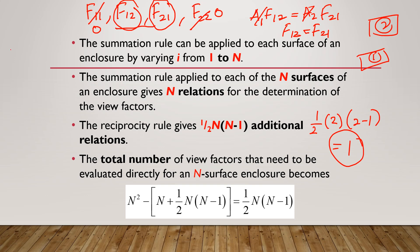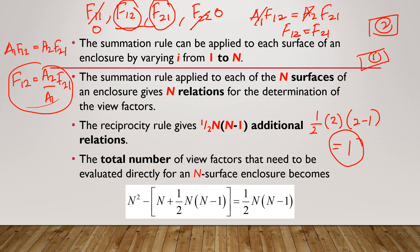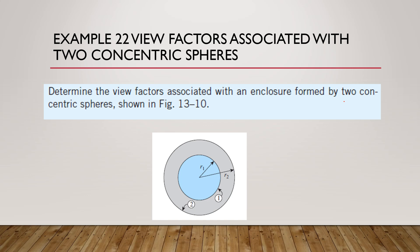If areas differ, rearrange the equation to get F1-to-2 = (A2/A1) × F2-to-1. So you only need to calculate one view factor to determine all others. From four view factors, only one needs independent calculation.